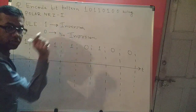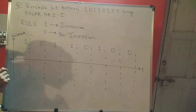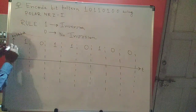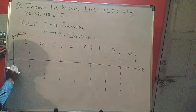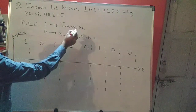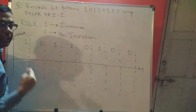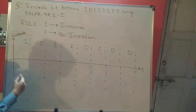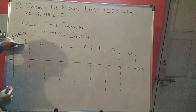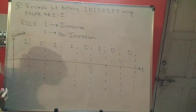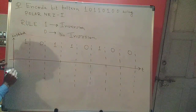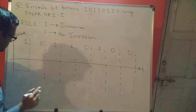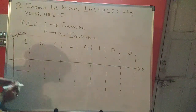A 1 represents inversion — I have to invert my voltage level. Since I am above the time axis, I need to go down below the time axis. I started from above, saw a 1, inverted, and went below the time axis. Next I see a 0. Zero means no inversion, so I remain below the time axis and proceed.